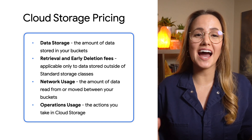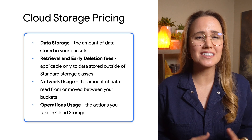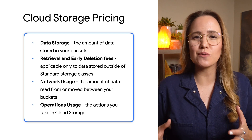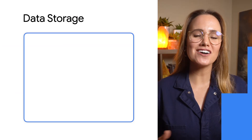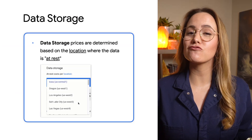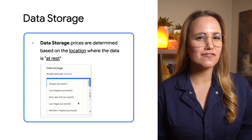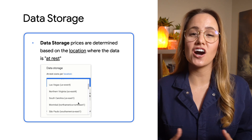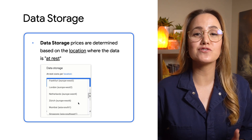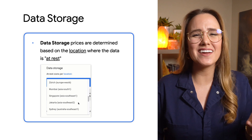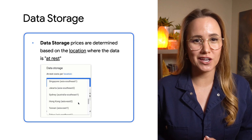Operations usage are the actions you take in cloud storage, like listing objects in your buckets. Remember, there are four different storage types, and the less frequently you access that storage, the less you pay to store it. Cost for all four is based upon at-rest per location, which means the cost is determined by where the data lives when it's just sitting in storage, not where it's actually being used.